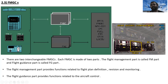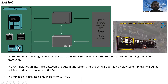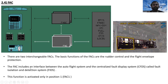Remember: the FM part handles flight plan management and monitoring, located in the rear avionics compartment. There are also two interchangeable flight augmentation computers (FACs). The basic functions of the FACs are rudder control and flight envelope protection. The FACs also include an interface between the auto flight system and the centralized fault display system — the fault isolation and detection system — which is activated only in position one, i.e., track one.